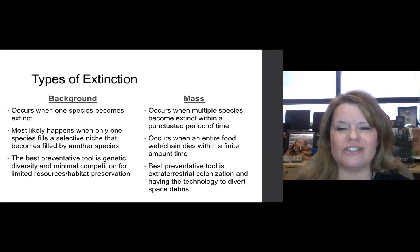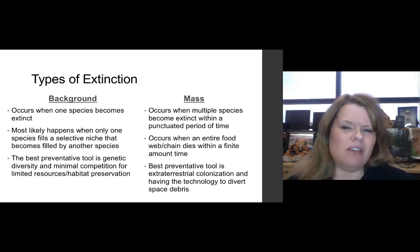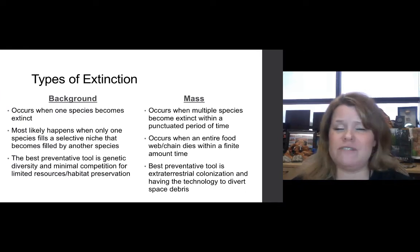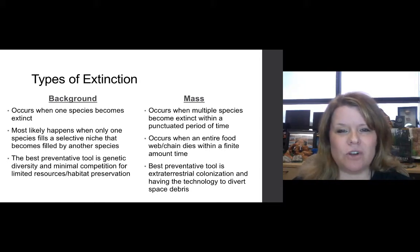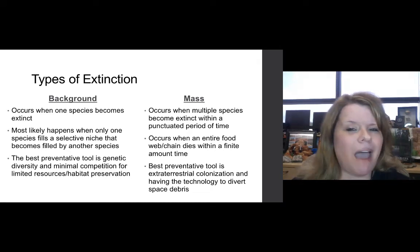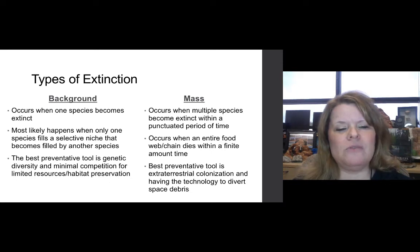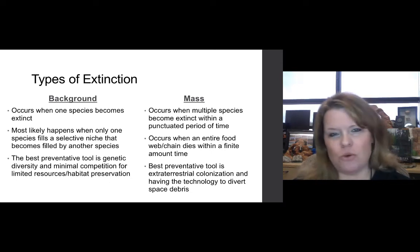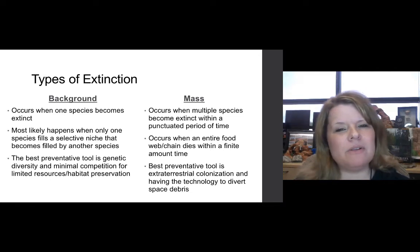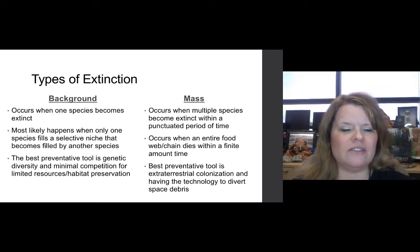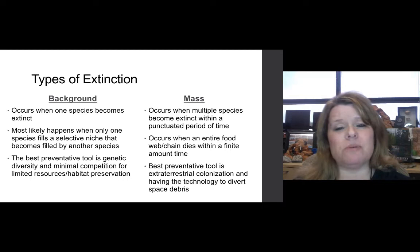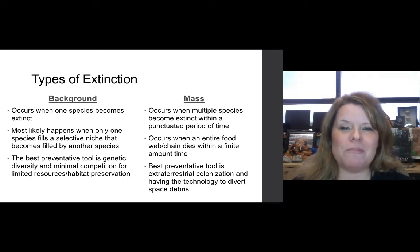Let's look at the types of extinctions. There's background extinction and mass extinction, and there is a definite need to understand the difference — not just for background information but for your test as well. A background extinction occurs when one species becomes extinct, not multiple ones. This most likely happens when one species fills a selective niche that becomes filled by another species, so competition plays a big role where one can't outdo the other.